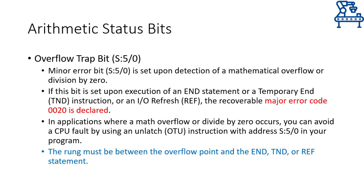Moreover, bit 0 of word 5 of the status file is called the overflow trap bit and is very useful in avoiding CPU fault during certain situations. This bit is also called the minor error bit and will be set if a mathematical overflow or division by zero is detected. If this bit is set by the end of the program or by the point where I/O addresses are refreshed, a major error of 0020 will be declared and the CPU will be faulted. A simple way to avoid this is to use an unlatch output instruction with the address S:5/0 — the minor error bit — between the point where such an error may occur and the end of the program.